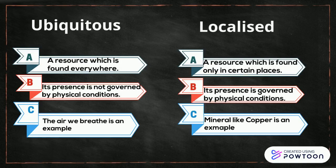Third point — we will talk about certain examples. Air is a ubiquitous resource as it is found everywhere, while minerals like copper, aluminium, and bauxite are found only at certain places.